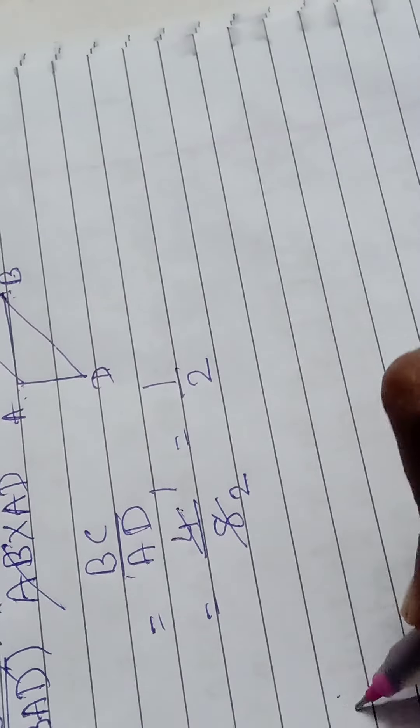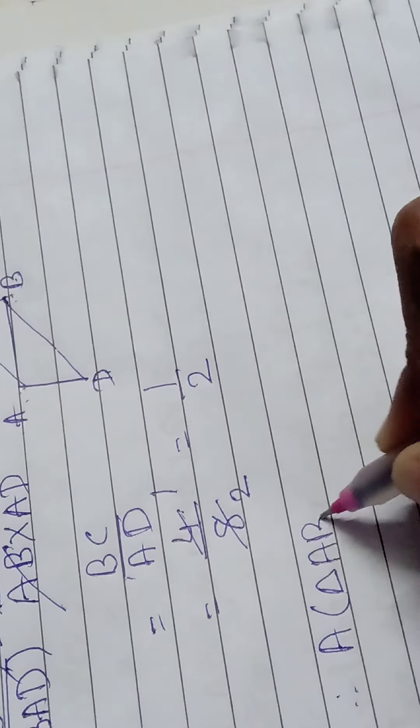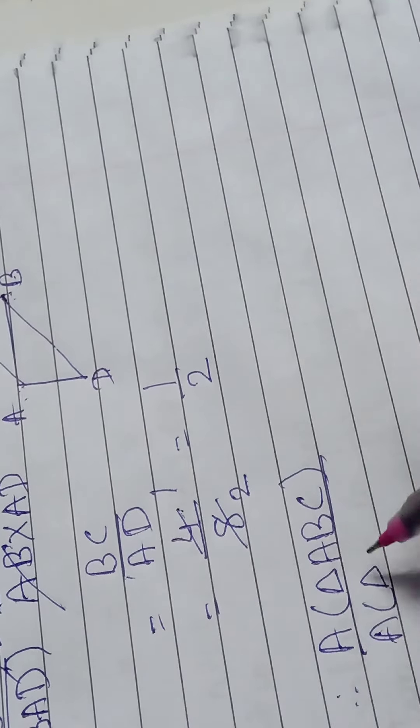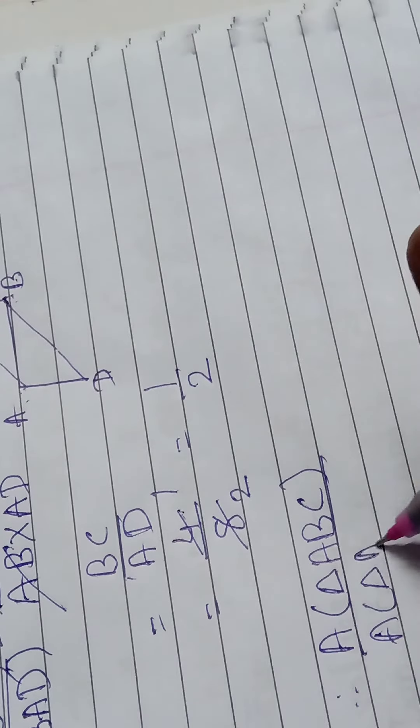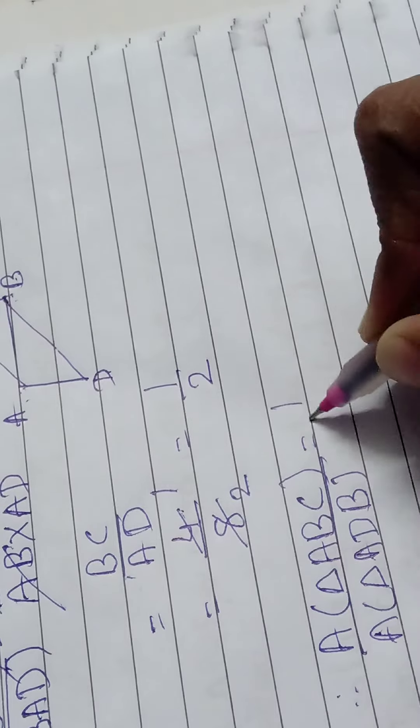So therefore, area of triangle ABC upon area of triangle ADB, or BAD, both are same, is equal to 1 upon 2.